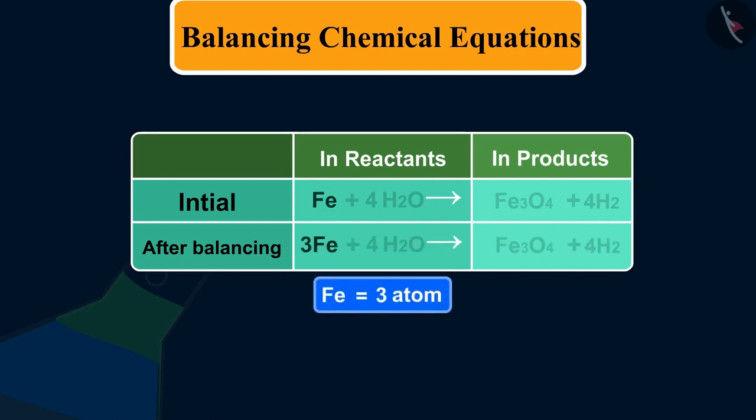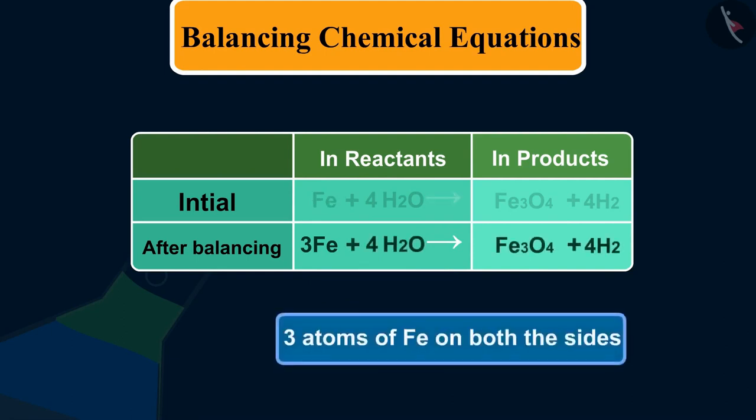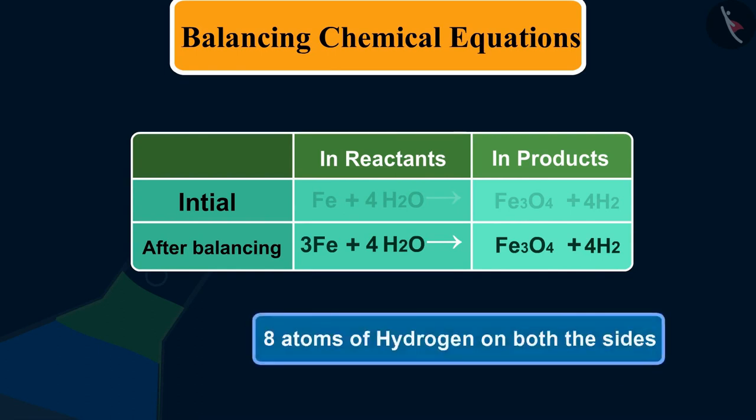Finally, let us examine this balanced equation. There are 3 atoms of iron, Fe, 8 atoms of hydrogen, H,